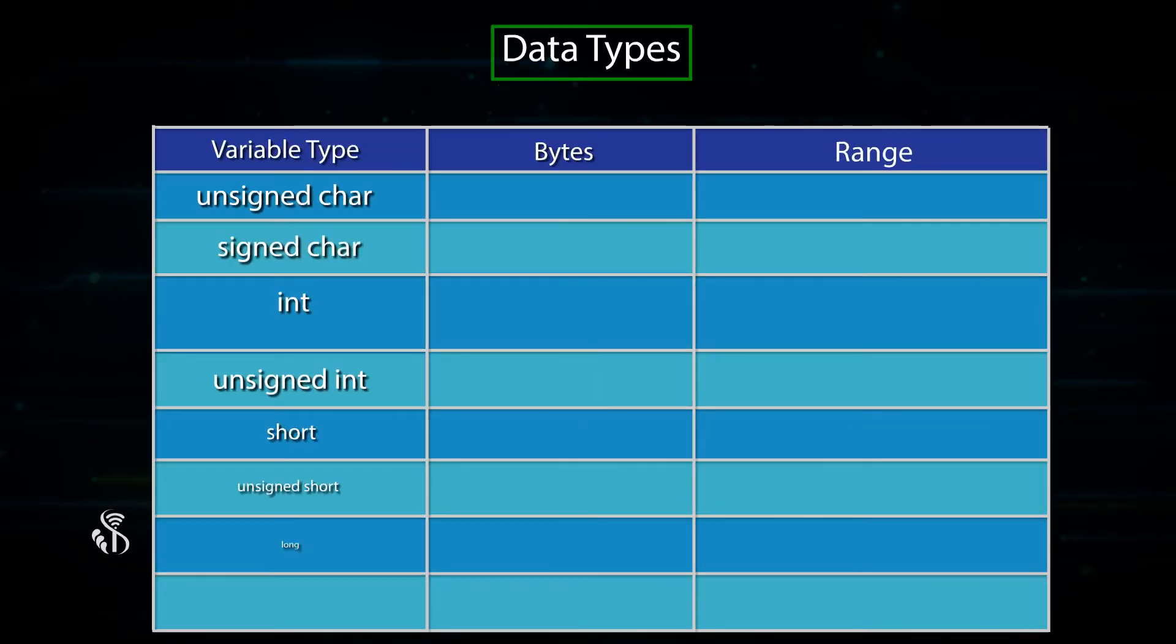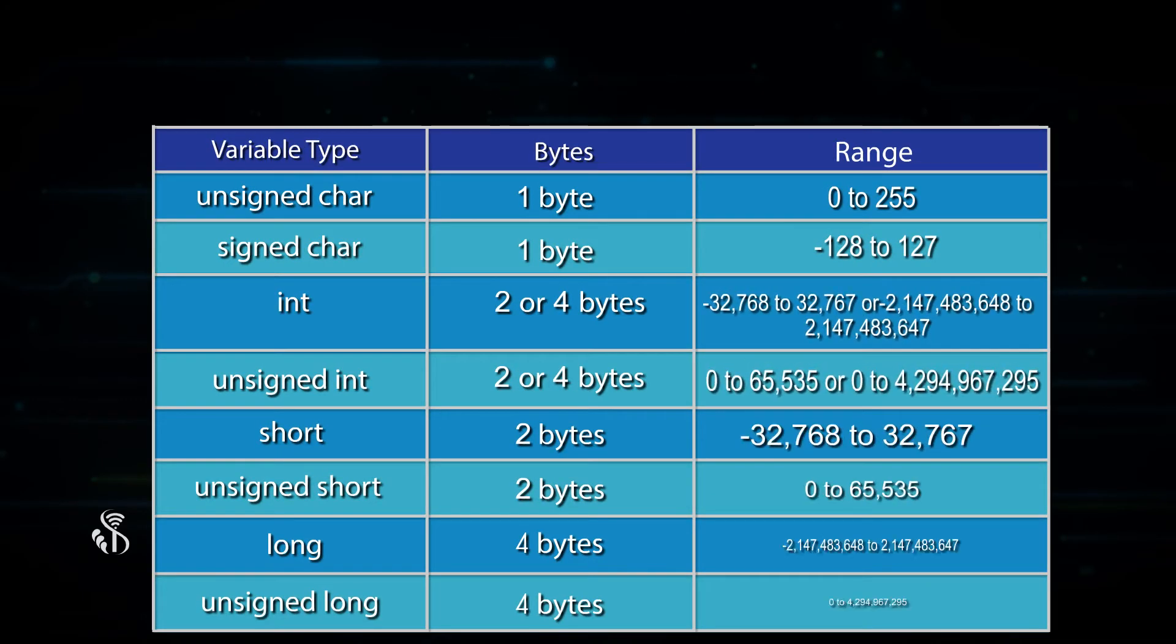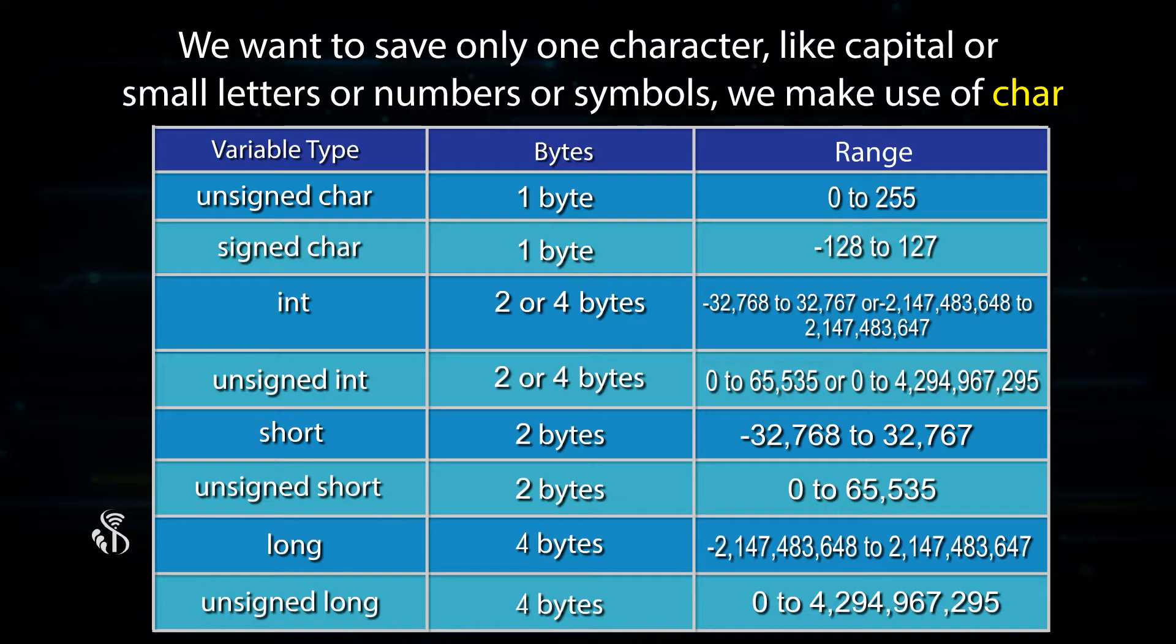Let us now see the different types of data types available to us. When we want to save only one character, like capital or small letters or numbers or symbols, we make use of char or character.